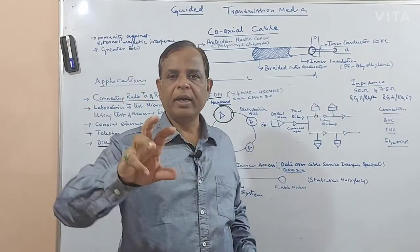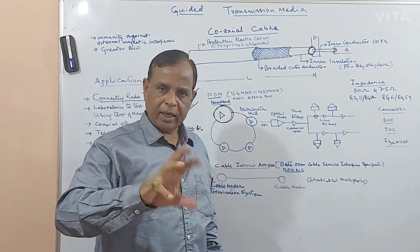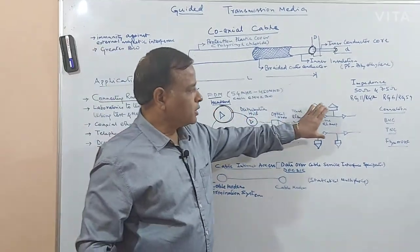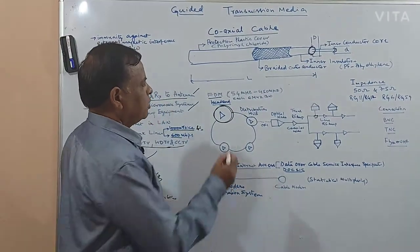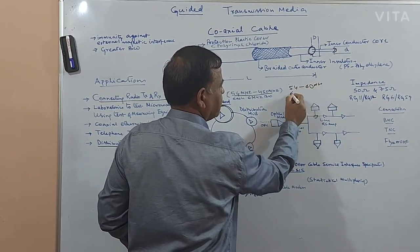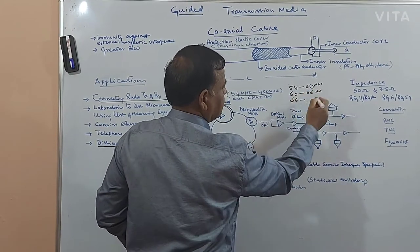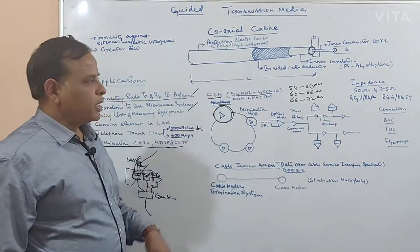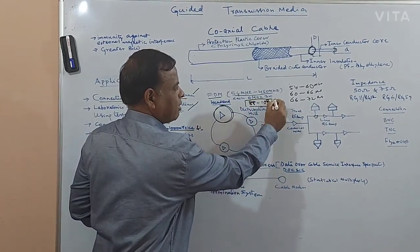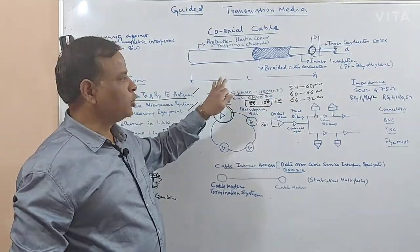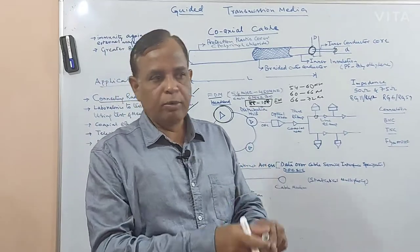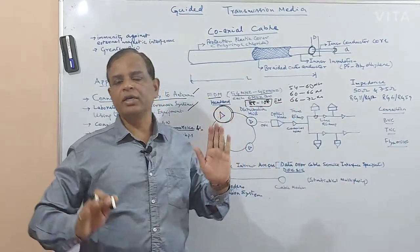Those days analog TVs had an RF tuner. You change the channel and you get different channels — you tune to each because all the channels are available. For example, one channel is available from 54 to 60 MHz, another from 60 to 66 MHz, then 66 to 72 MHz and so on. From 88 to 108 is the FM band, which is excluded. The RF tuner picks up the channel in that particular frequency range and you are able to view it.